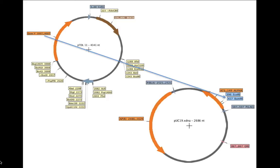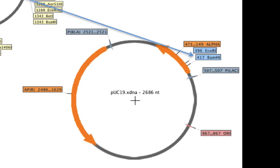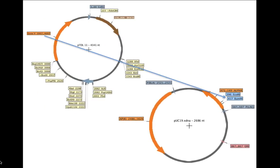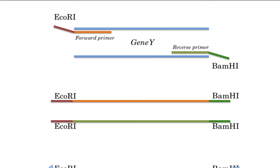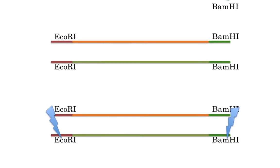Let's do some PCR-based cloning today. We have two plasmids: plasmid TDL11 and PUC19. All we want to do is PCR amplify gene Y from TDL11 and clone it into PUC19 using restriction enzyme sites ECO R1 and BAMH1. We'll design a forward primer with a tail containing the ECO R1 site and a reverse primer with a tail containing the BAMH1 site. After PCR amplification, we'll get a product containing gene Y flanked by ECO R1 and BAMH1 sites, which we can cleave and use to clone into PUC19.